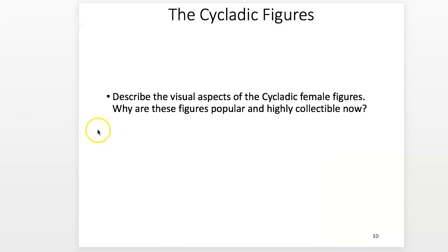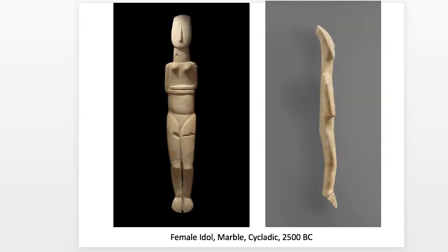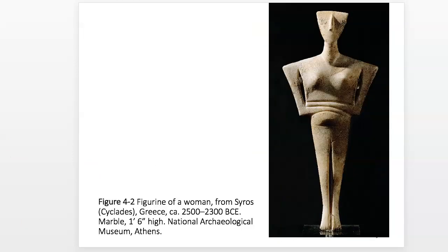This gets us into why these figures are popular and highly collectible now. In a lot of ways they're very much like modern art — very similar to contemporary abstract sculpture. They're very desirable because even though they're really old, they fit an aesthetic that's highly valued today. And there are a lot of fakes because of that — they've been forged quite a bit because people want to make money off of faking art, and forgeries are still found in the world.